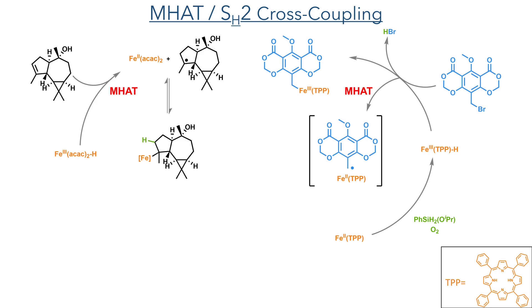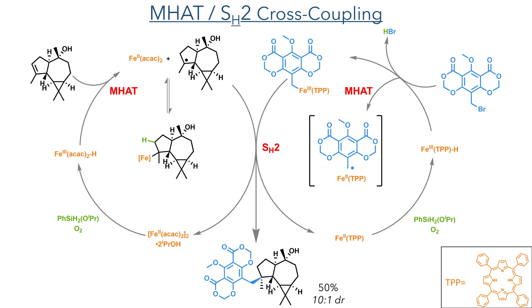In the other catalytic cycle, another iron hydride — in this case formed from iron-3 ACAC — reacts with the alkene coupling partner, again performing a metal hydride hydrogen atom transfer. As we saw in the other catalytic cycle, this can form either a stabilised radical or an organo-iron compound possessing a carbon–iron bond. Both this radical and the benzylic radical then take part in a bimolecular radical substitution, which is likely directed by the steric hindrance in the aromadendrane fragment. This formed the carbon–carbon bond at the quaternary centre with a 50% yield and a 10-to-1 diastereomeric ratio.